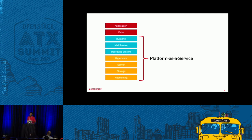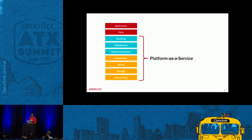Moving further up, you have platform as a service. It abstracts the bottom four layers in addition to runtime, middleware, and operating system. Platform as a service provides the operating system, libraries, and programming languages for you as a cloud consumer. The cloud consumer provides the application to be deployed on the instances and does not manage the underlying cloud infrastructure.